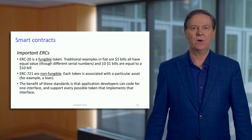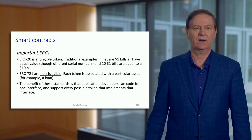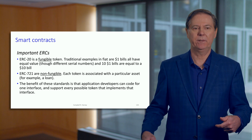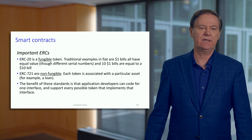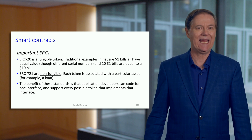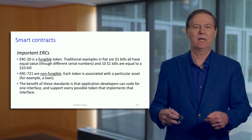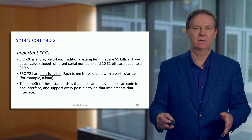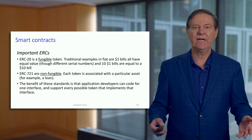ERC-20 is a fungible token, meaning every ERC-20 token is identical in value — like a $1 bill in fiat currency, where every $1 bill has the same value and 10 $1 bills equals a $10 bill. There's another ERC called ERC-721, which is a non-fungible token, or NFT. With this token, the value is unique to that token, representing something specific — sometimes called deeds — and recently they've become popular for representing art, videos, and even tweets.